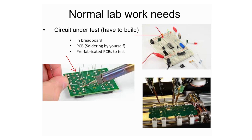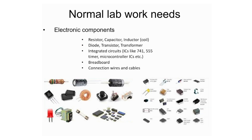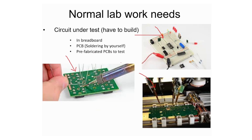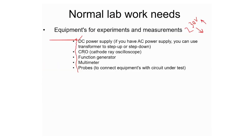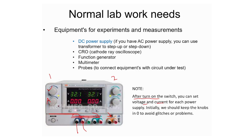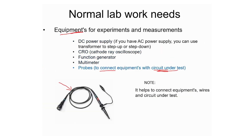You also need the components to build the circuit. Any normal lab work requires these components, a circuit under test, and the equipment. In the lab, you will see practically how each piece of equipment works and how to use it. This general procedure applies whether it is an electrical machines lab, electronics lab, or power electronics lab — the procedure is similar.